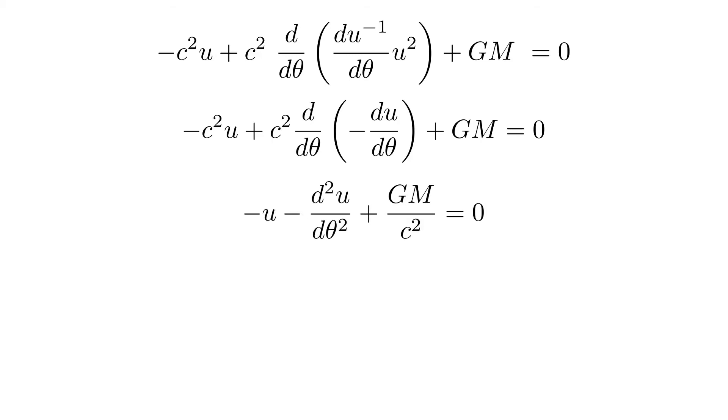We divide both sides by c squared. We will now rewrite this equation into a familiar differential equation. The second derivative of u plus u minus GM over c squared equals 0.